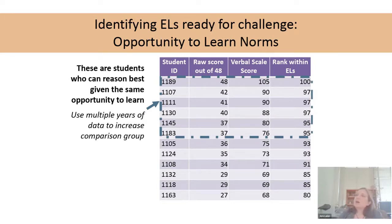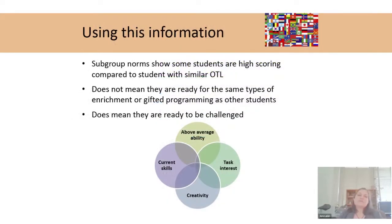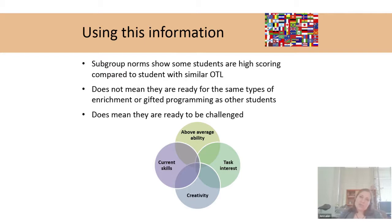Dave Lohman and I have both published on this, and we'd be happy to share resources including Excel sheets that do this. So, using the subgroup norms, there are some students performing higher or lower compared to others with similar opportunities to learn — they learn English at a faster rate than other English learner students. As I mentioned, it doesn't mean they're ready for the standard gifted and talented programs you may already have. It does mean they need services or differentiation — they have instructional needs, but they may not be ready for those programs.